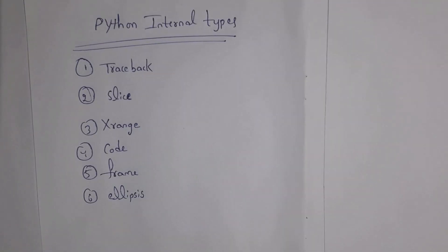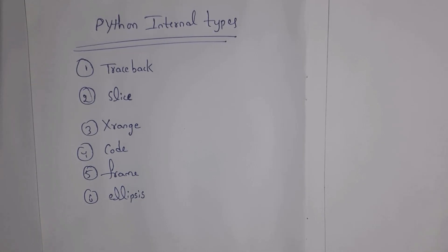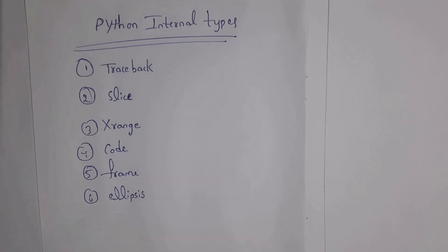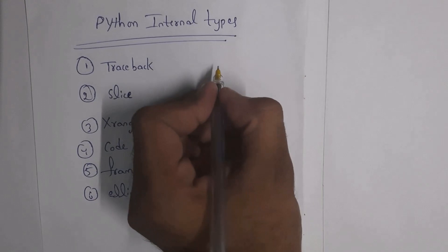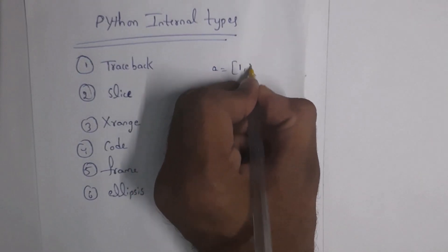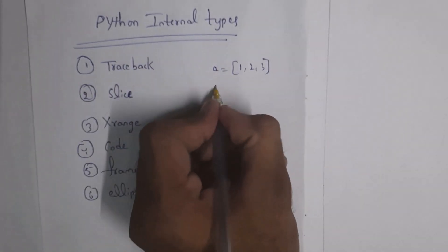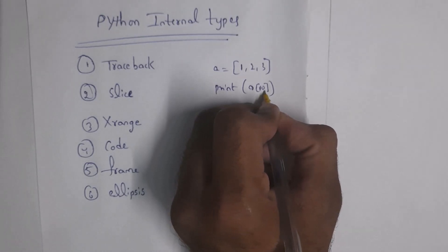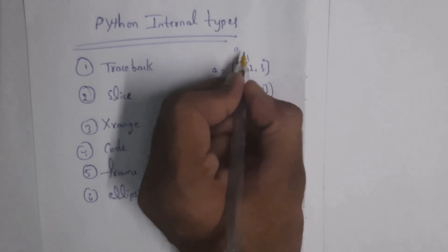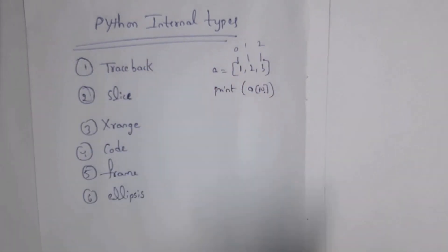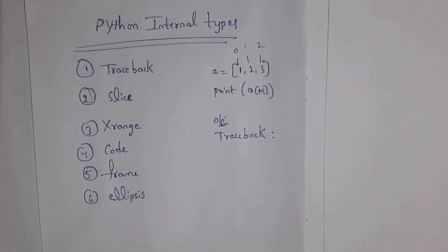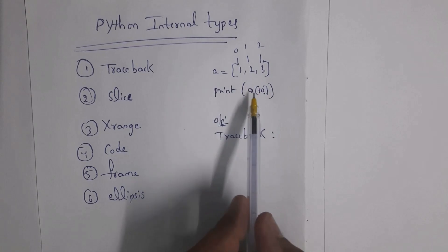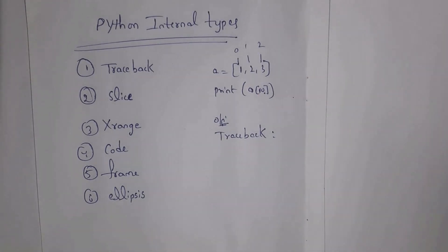Next, I will explain internal types. Internal types are classified into six types: traceback, slice, xrange, code, frame, and ellipsis. First, traceback — traceback is an error message. For example, a = [1, 2, 3] and print(a[10]). Index 10 doesn't exist, so you get a traceback error: index is out of range.